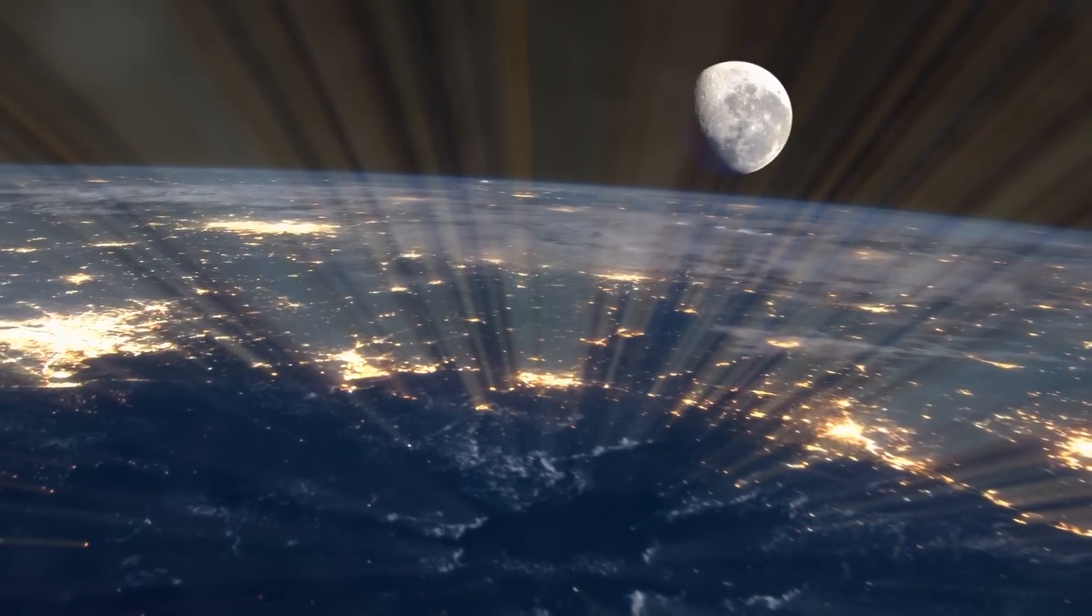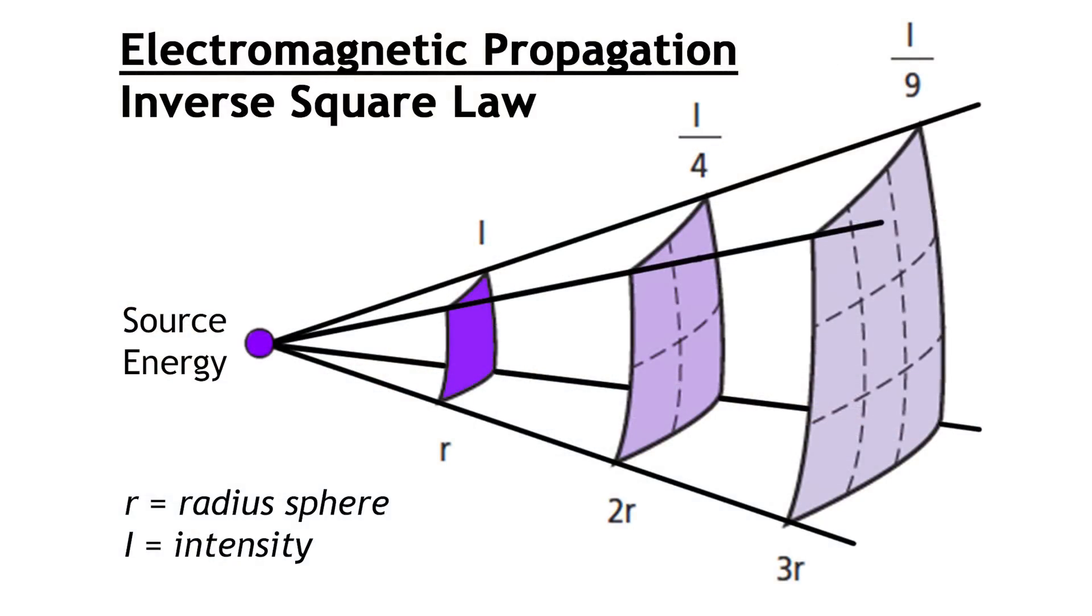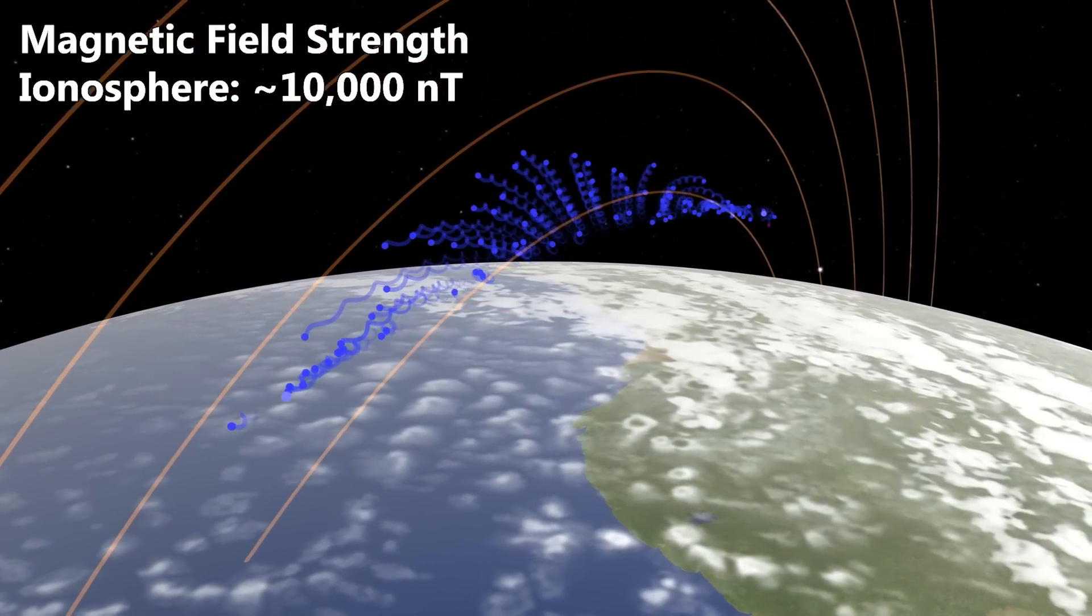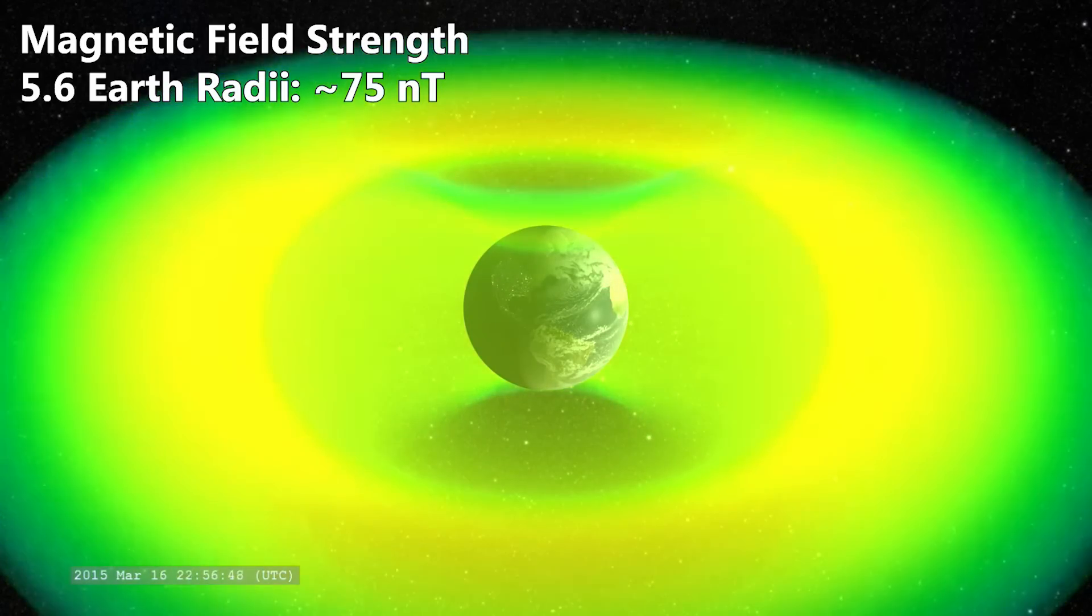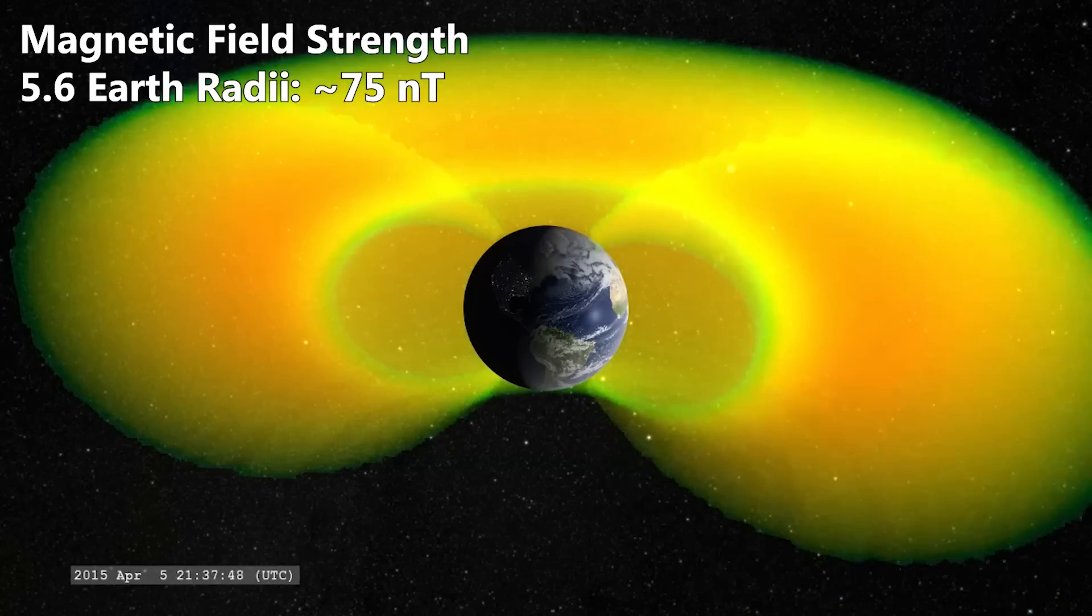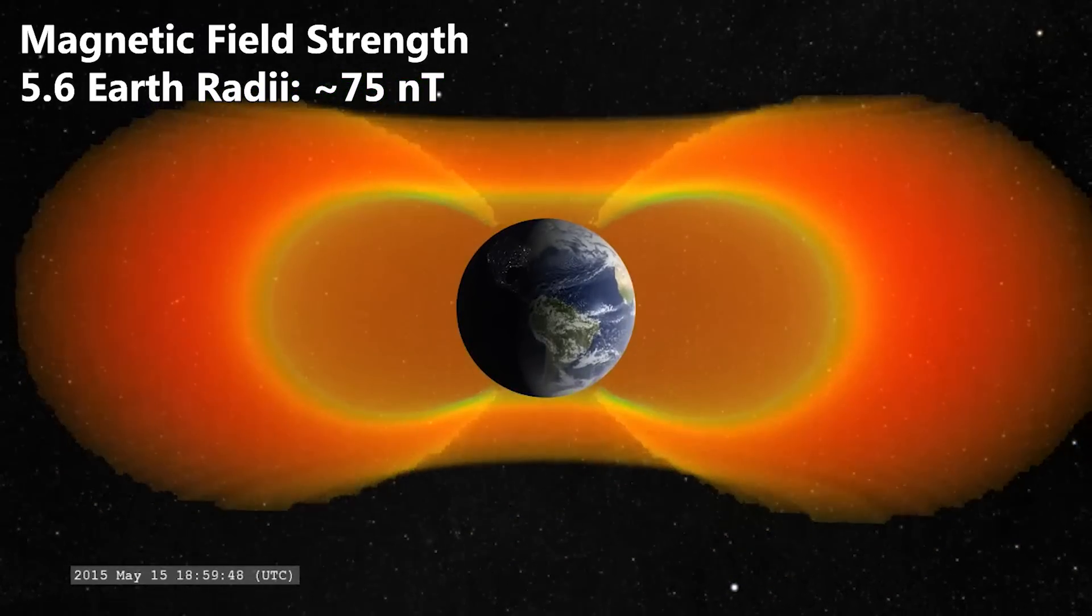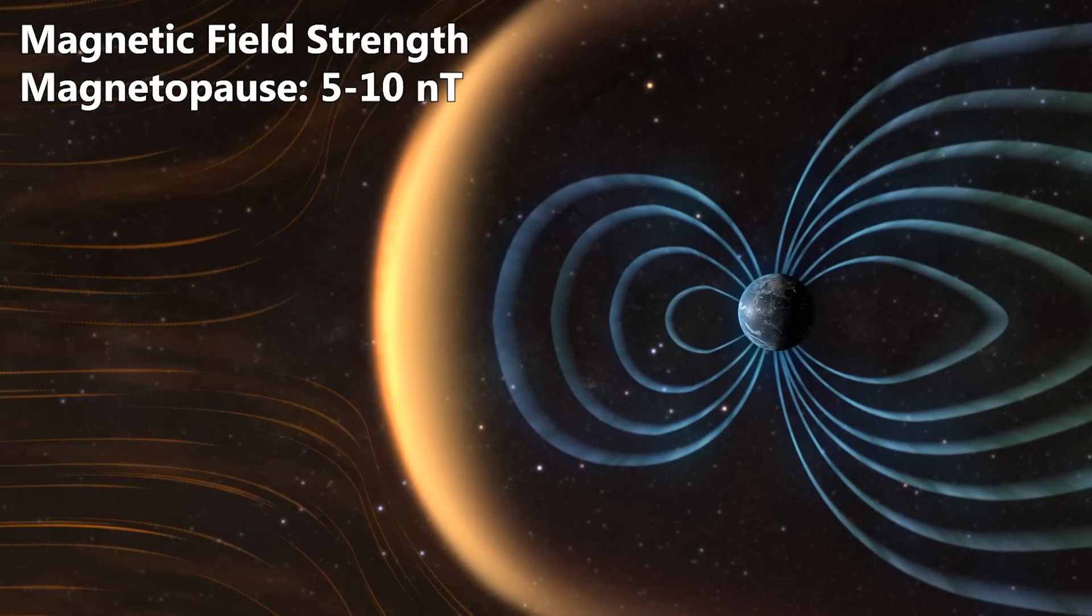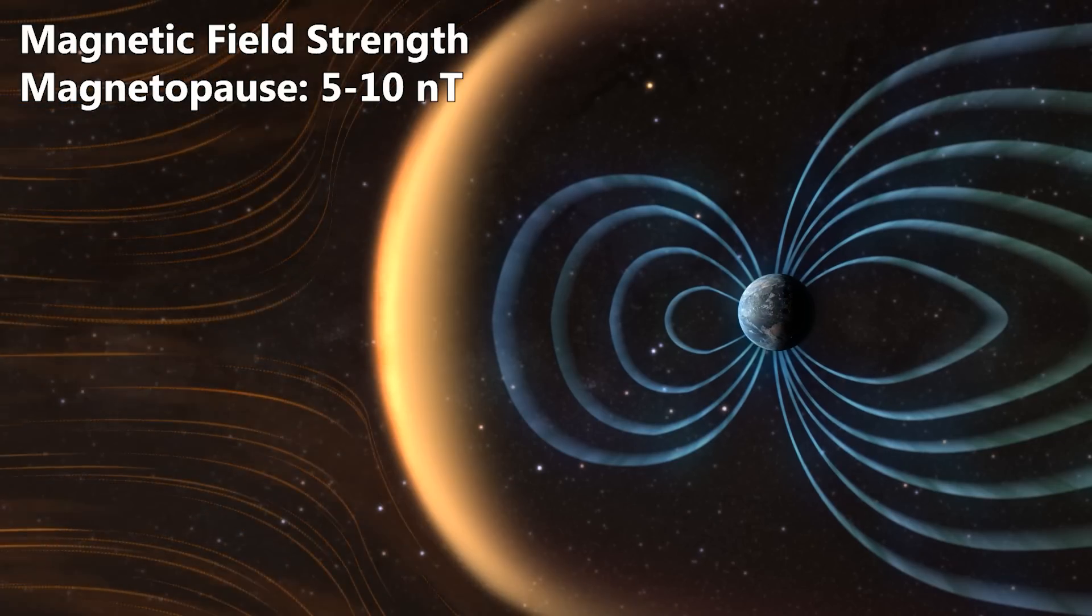The magnetic field strength in fact decreases in strength as it expands outwards and this is via the inverse square law, so it drops off exponentially. Therefore, the magnetic field strength in the ionosphere is about 10,000 nanotesla, that's 100 kilometers up. And then going out further to 5.6 Earth radii out in the radiation belts, the magnetic field strength is on average about 75 nanotesla.